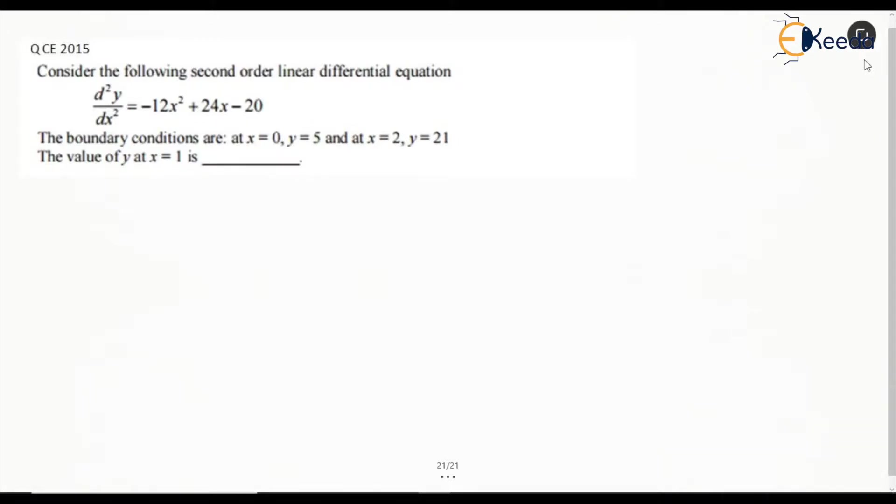Consider the following second order differential equation which is given here. The boundary conditions are x=0, y=5 and at x=2, y=21. We need to find the value of y at x=1.